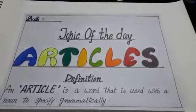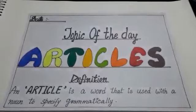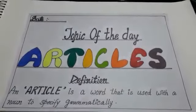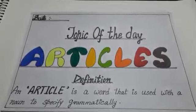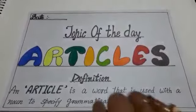An article is a word that is used with a noun to specify grammatically. Means, article wo word hota hai, jisko hum use kerte hai noun ke saad, so that we can specify that particular noun.